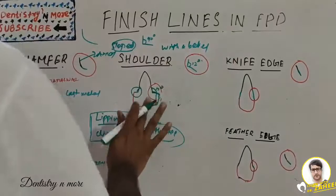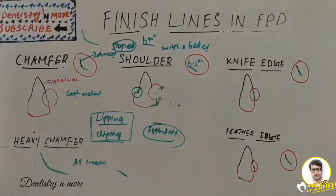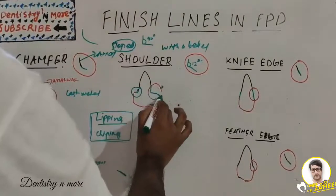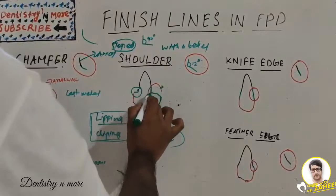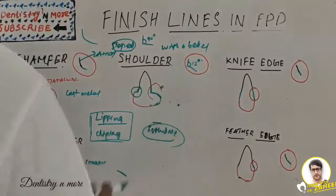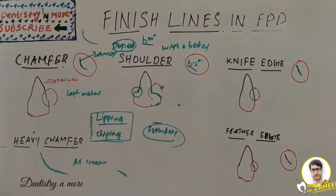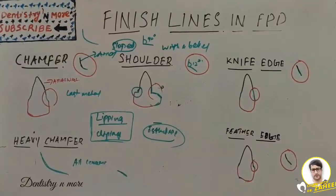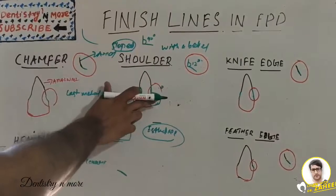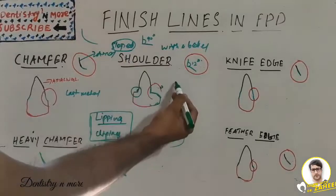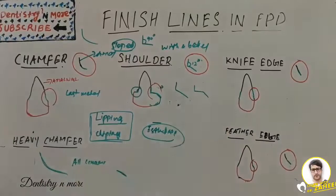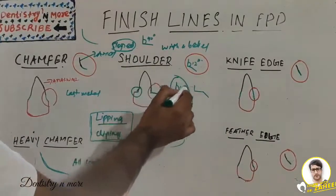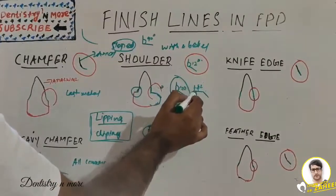Shoulder with a bevel has a 90-degree cavo-surface angle with an added bevel. It is indicated in proximal walls for inlays and onlays, occlusal shoulders of onlays, mandibular three-quarter crowns, and facial finish lines of metal-ceramic restorations where gingival aesthetics is not critical. Do not confuse this with a sloped shoulder — the sloped shoulder is 120 degrees, while shoulder with bevel is 90 degrees with an added bevel.